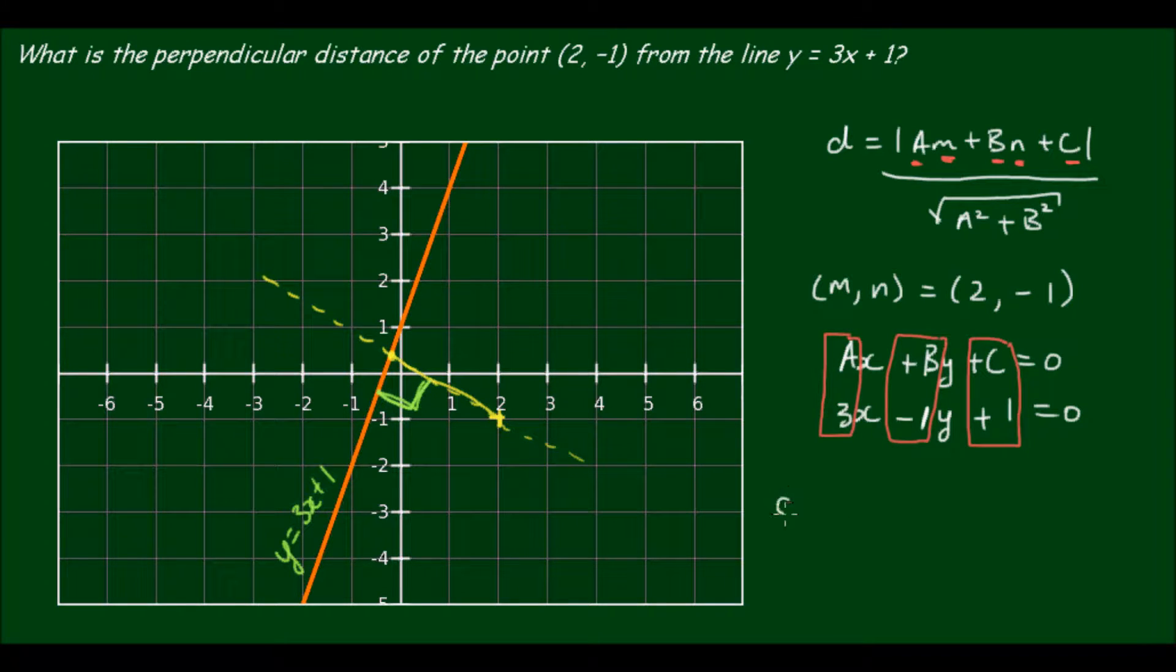So knowing these values we can just plug them into our formula. So we have d equals the absolute value of 3 times 2 plus negative 1 times negative 1 plus positive 1, divided by the square root of 3 squared plus negative 1 squared. And I'll put a little heads on the ones to not confuse them with the absolute value bars.